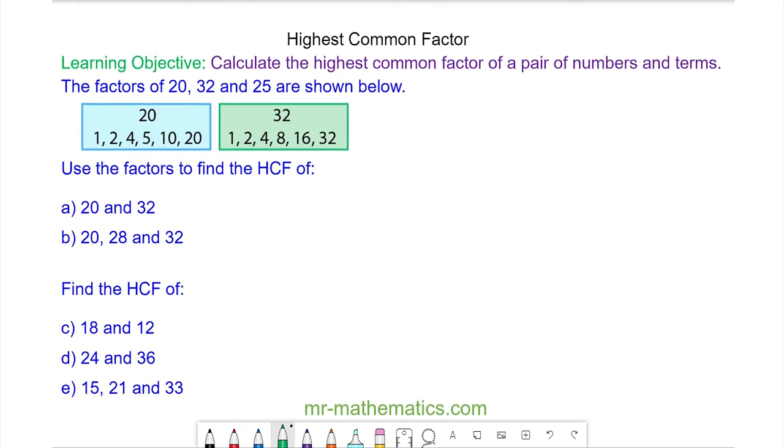Hello and welcome to our lesson on finding the highest common factor of two or more numbers. So we begin with question A and here we have the factors of 20, 32.